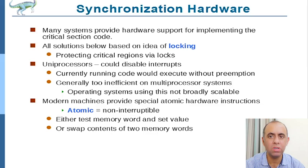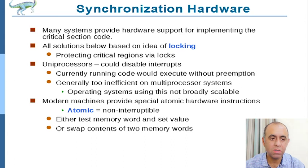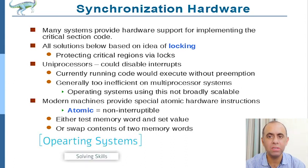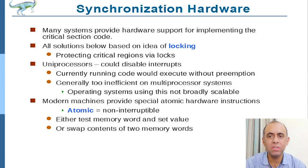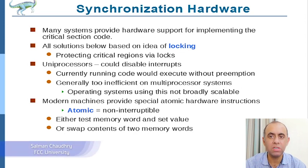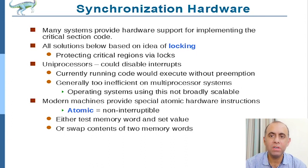The hardware solution — hardware support for the critical section problem — exists. There are certain instructions in the CPU that help you go into the critical section and make other processes wait, because we need an entry section with no race condition. There can be a race condition in the entry sections as well, and if there is, there will be unexpected outcomes which we don't desire.